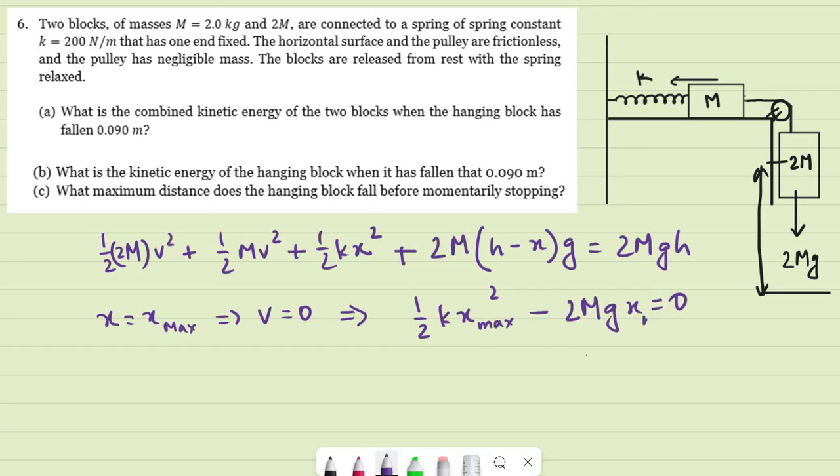And this x is x max, of course. So we can cancel a couple of things. We can just cancel x max once. So what do we find? We find x max equals 2mg times 2 divided by k.